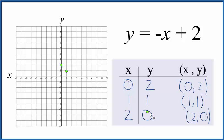You could stop with two points, but I'd like to use three. If I made an error, I'll catch it. So x is 2, y is 0. There's our line. Let's put a line through that. Then we could put arrows to show that it goes to infinity, and that's the line for y equals negative x plus 2.